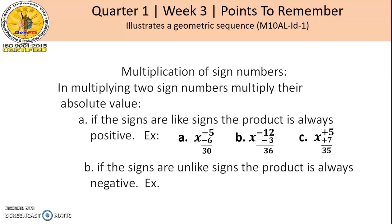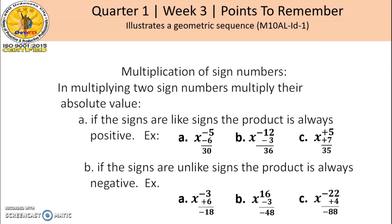If the signs are unlike signs, the product is always negative. Examples: Letter A, negative 3 times positive 6, the product is negative 18. Letter B, positive 16 times negative 3, the product is negative 48. For letter C, negative 22 times positive 4, the product is negative 88.